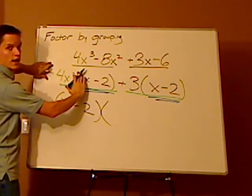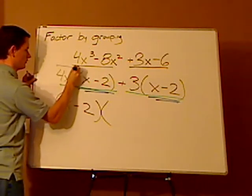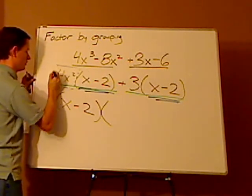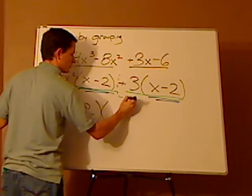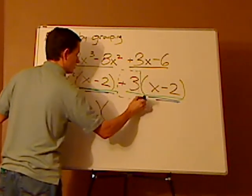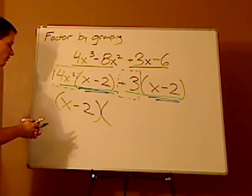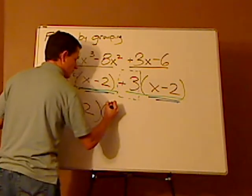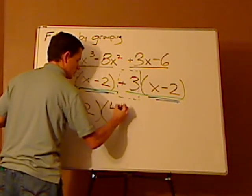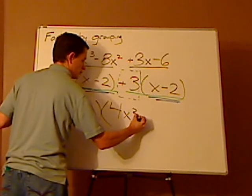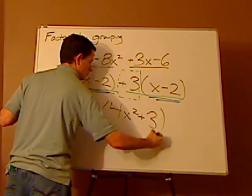Which would be 4x squared outside, and then plus the 3. So then you have 4x squared plus 3.